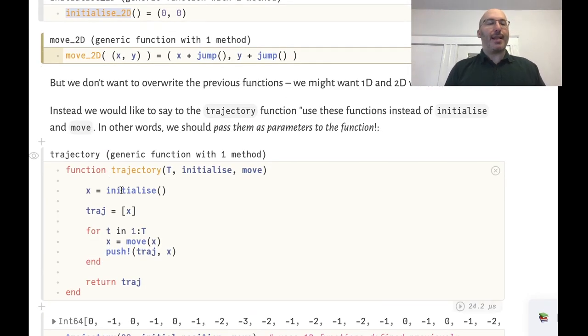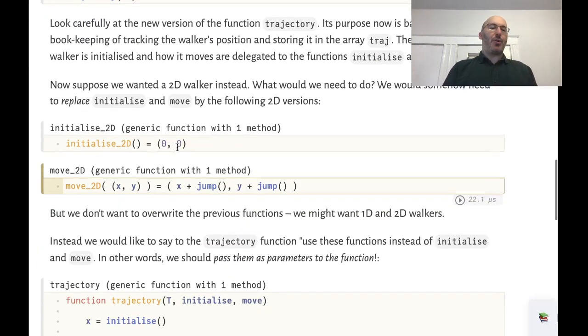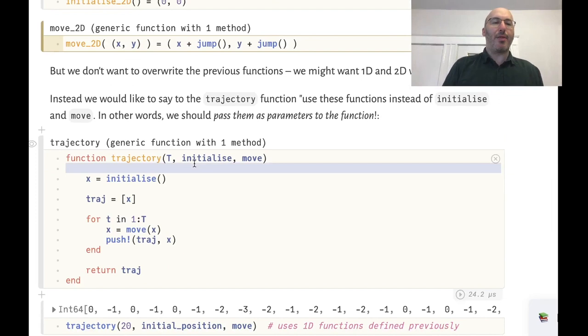And so the trick is that if we look at the trajectory function what we want to do is tell it, oh this initial_position function that you're calling I actually want to replace that with a different function.